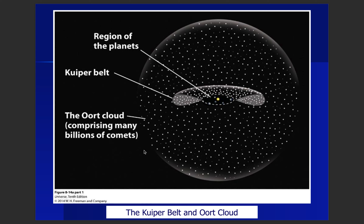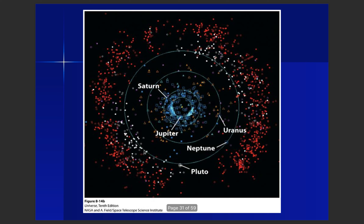Beyond the outer regions of the solar system we have the Kuiper belt, and beyond that the Oort cloud. The Kuiper belt is made of trans-Neptunian objects — rocky and icy bodies. Further out, the Oort cloud is made up of billions of comets, forming a spherical region around our entire solar system. Comets come in from this Oort cloud region.